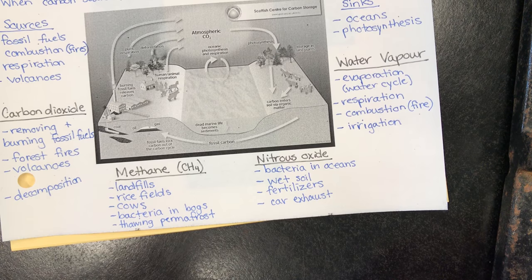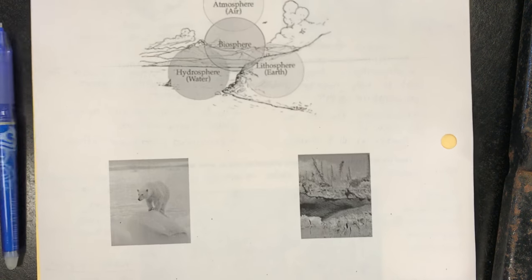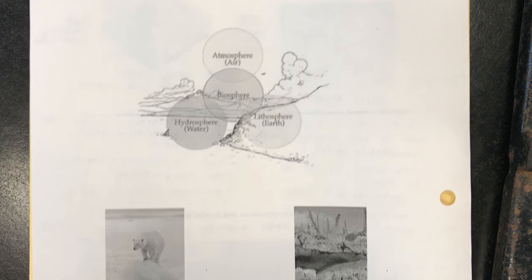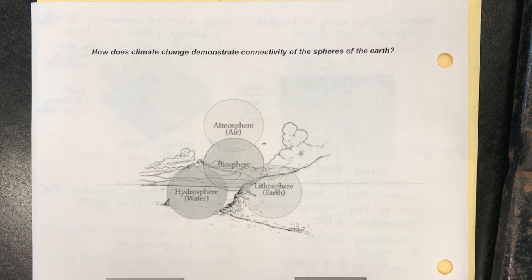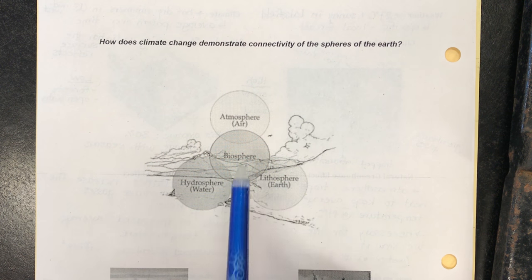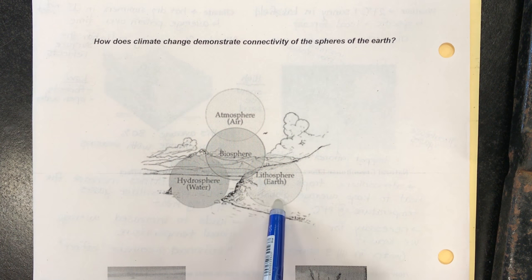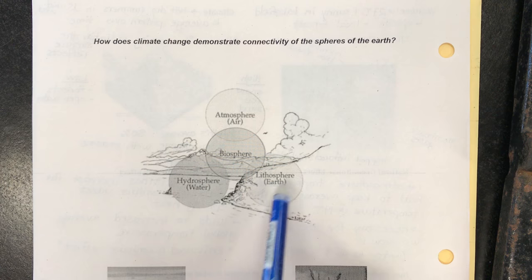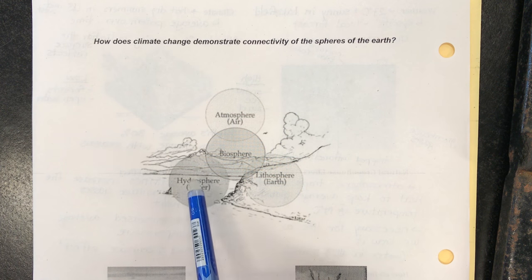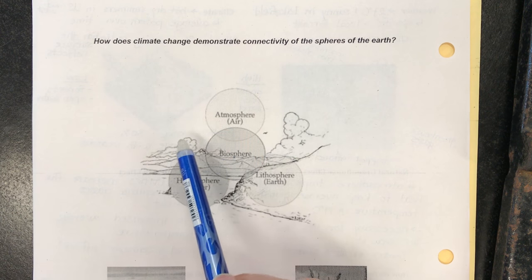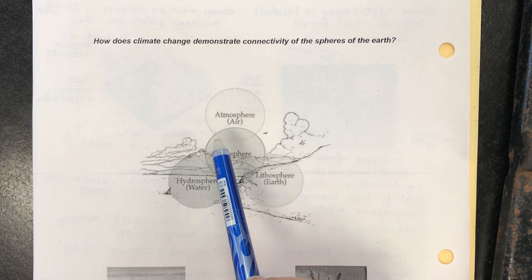Moving on to the back side of the page, we're going to look at some of the connections between all the different effects of climate change. Looking at the top piece here we've got the four spheres: the atmosphere, the biosphere, the hydrosphere, and the lithosphere. Lithosphere is like the ground, hydrosphere is all the water, atmosphere is the air, and the biosphere is all the living things, plants and animals.